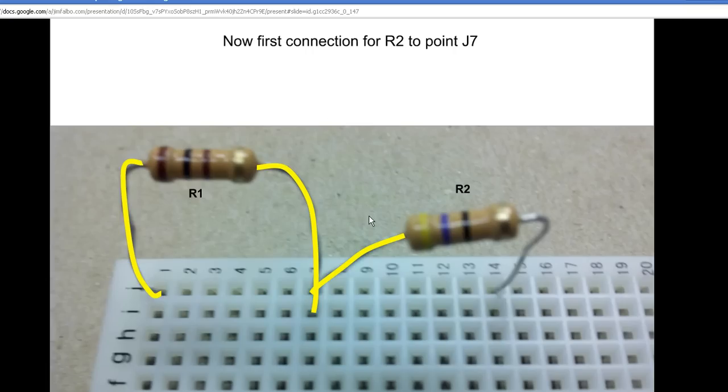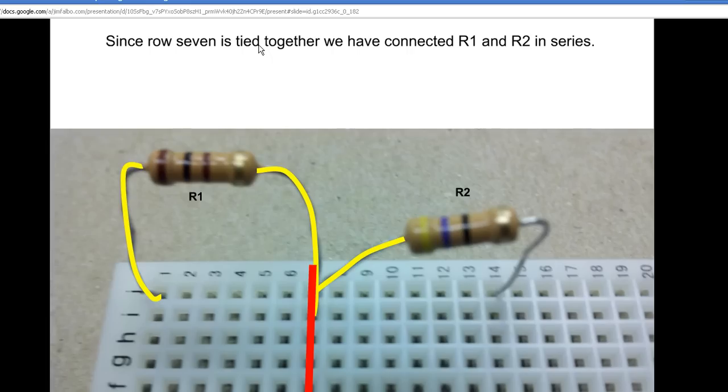Now R2 is going to be placed—we've made this connection. One side of R2 is now in J7.